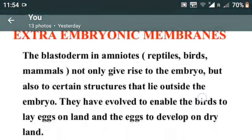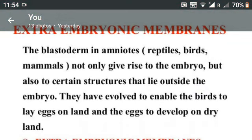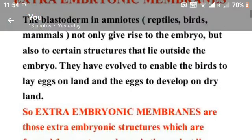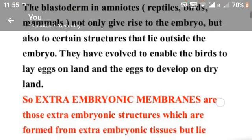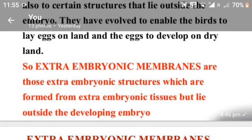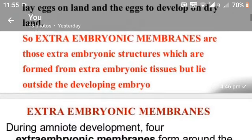The blastoderm in amniotes not only gives rise to the embryo, but also to certain structures that lie outside the embryo. These have evolved to enable vertebrates to lay eggs on land and for the eggs to develop on dry land. Extraembryonic membranes are those extraembryonic structures which are formed from extraembryonic tissue that lies outside the developing embryo.